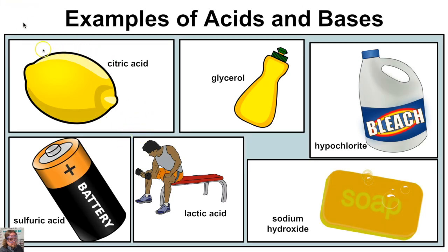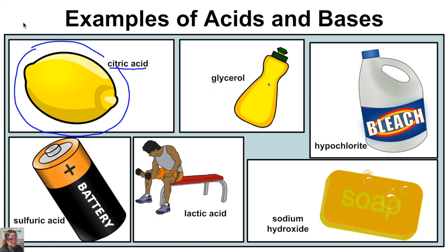We know from prior experience that when we bite into a lemon, lemons are going to have a sour taste. Why do lemons have a sour taste? Because they are made up of citric acid, and acids have a sour taste.